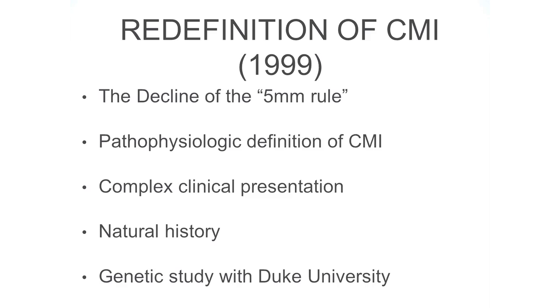One of the major contributions of that study was that from analysis of some families, they realized there were pedigrees — a genetic predisposition in some families to develop Chiari and transmit it from one generation to the next. A genetic study was started in 1998 along with Duke University, which is still ongoing today. That was the beginning of the new modern era of Chiari.